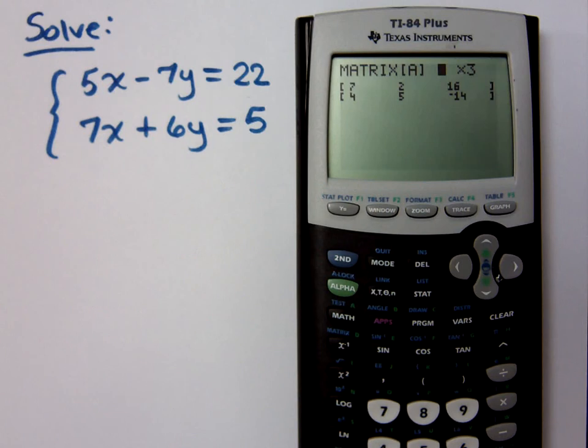So I want to edit A, so it's a 2 by 3. My coefficients are 5, negative 7, and 22. My other coefficients are 7, 6, and 5.